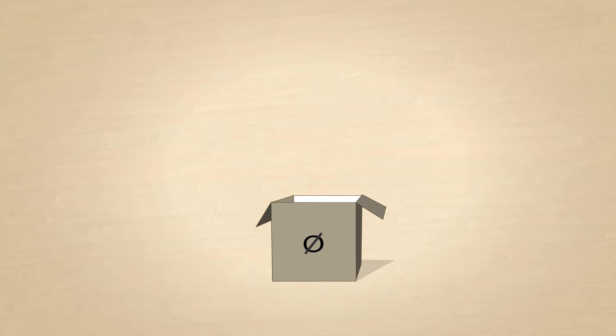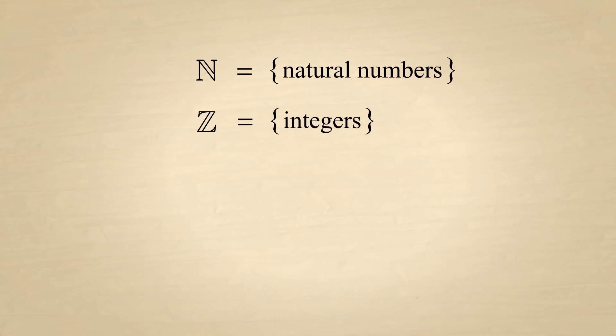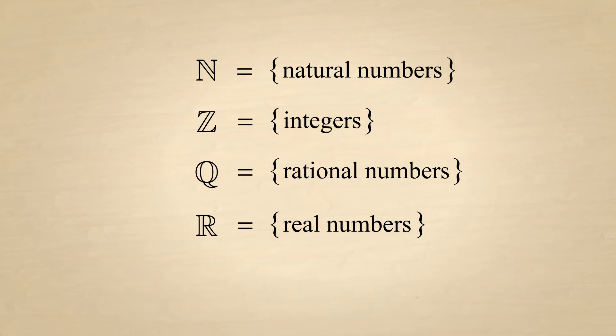Other important sets are sets of the various number types which we explored in pre-algebra. The set of natural numbers is typically designated by the bold-faced letter N. Likewise, the set of integers is designated with the letter Z, the set of rational numbers is designated by Q, and the set of real numbers is designated by R. Another important set is the set of complex numbers C, which we will discuss in a lecture later in this series.